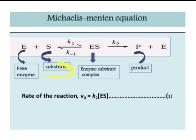So, free enzyme combines with substrate with forward rate K1 to form the enzyme-substrate complex ES. There is also decomposition of ES back to E and S with rate K-1. The second step is ES giving product with rate K2, and the enzyme remains. Therefore, the rate of reaction equals K2 times the concentration of ES.